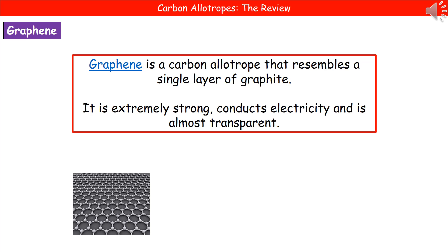Our third allotrope of carbon is a relatively modern version called graphene. Do be careful not to mix up graphene and graphite. Graphene is the carbon allotrope that is pretty much a single layer of graphite. It's got some impressive properties — it's extremely strong, it will conduct electricity, and it's almost transparent. This is something that a large number of tech companies are looking into and doing a lot of research on, as it has potentially massive implications for the tech of the future.